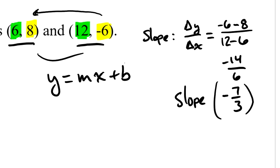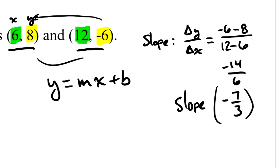And I can plug in the x and y values from either one of my points. I'm going to use the first point. And my first point, y is 8, so I'll write 8 equals. And my slope was negative 7 thirds, and I'm going to multiply that by a value of x. And you can see x is 6, it's right there, and then plus b.